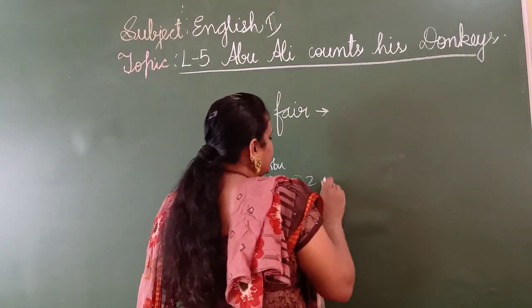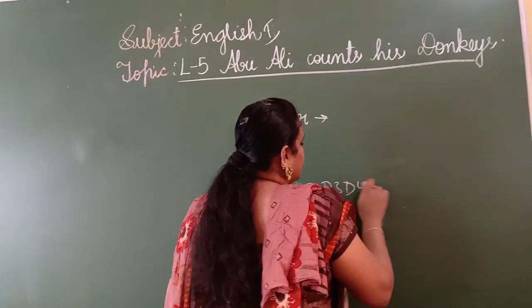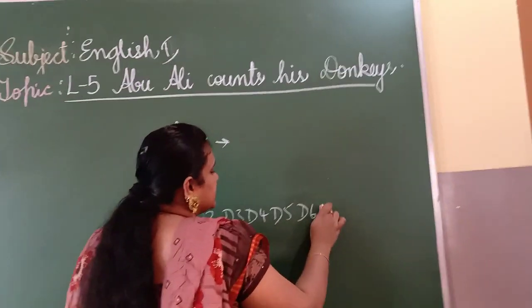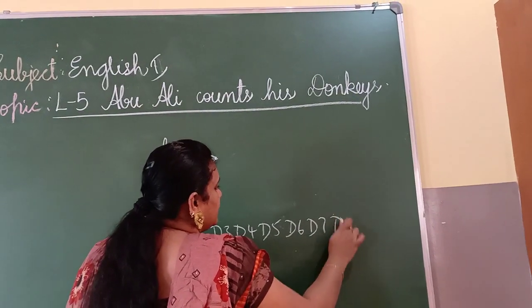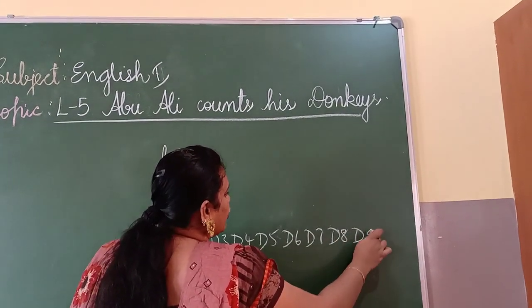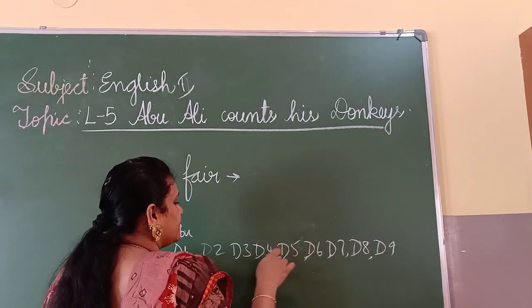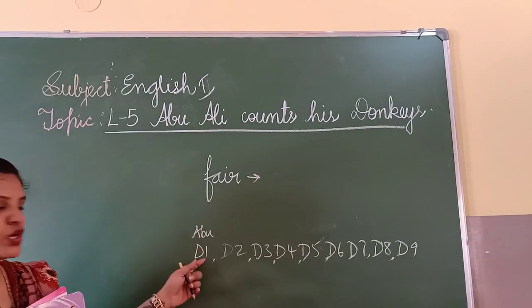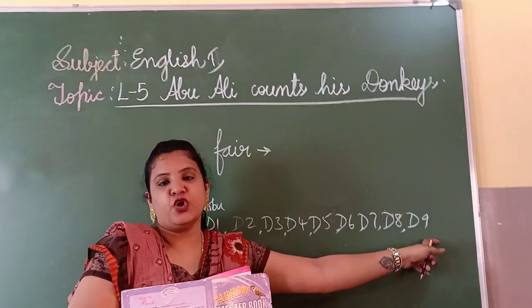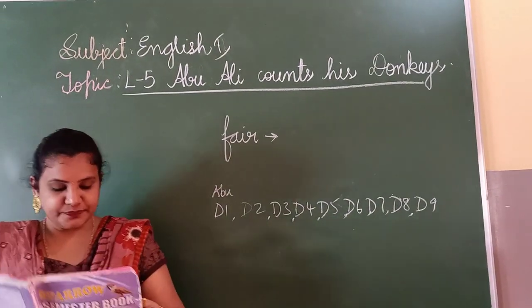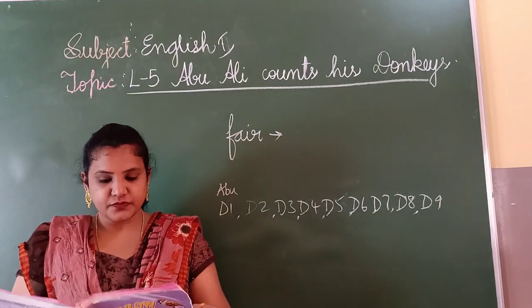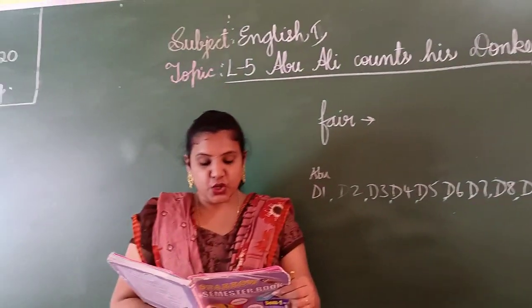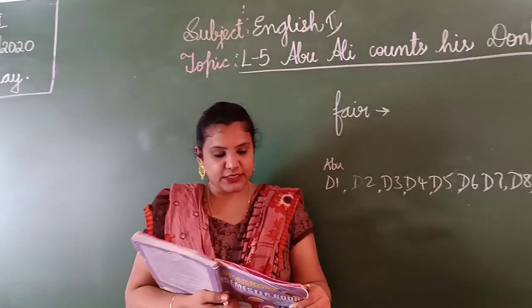Donkey two, donkey three, donkey four, donkey five, donkey six, donkey seven, donkey eight, donkey nine — they all followed like this. He sat on the first donkey and all the donkeys followed. After he had travelled a mile, Abu Ali thought that he must count his donkeys.